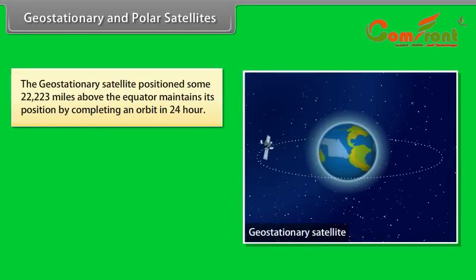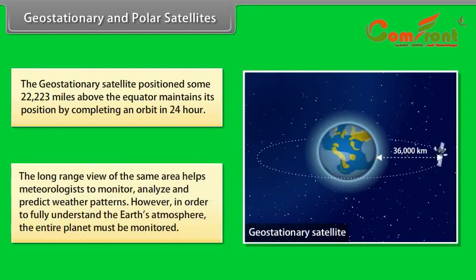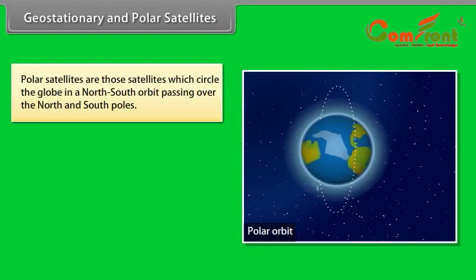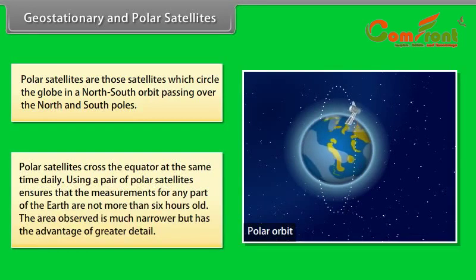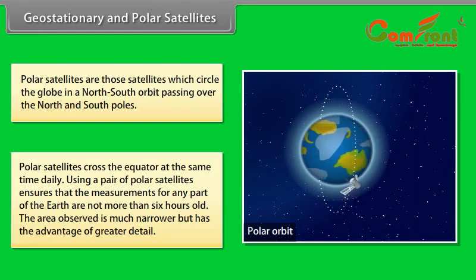Geostationary and polar satellites. The geostationary satellite positioned some 22,223 miles above the equator maintains its position by completing an orbit in 24 hours. The long range view of the same area helps meteorologists to monitor, analyze, and predict weather patterns. However, in order to fully understand the earth's atmosphere, the entire planet must be monitored. Polar satellites are those satellites which circle the globe in a north-south orbit passing over the north and south poles. Polar satellites cross the equator at the same time daily. Using a pair of polar satellites ensures that the measurements for any part of the earth are not more than six hours old. The area observed is much narrower but has the advantage of greater detail.